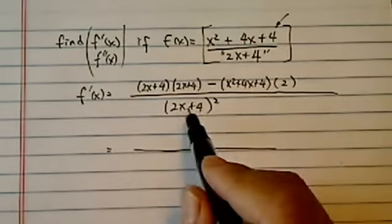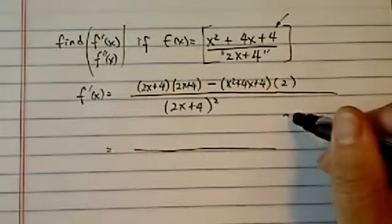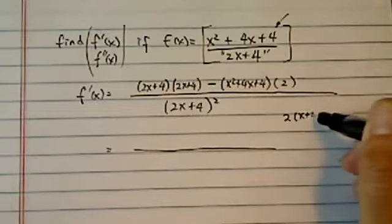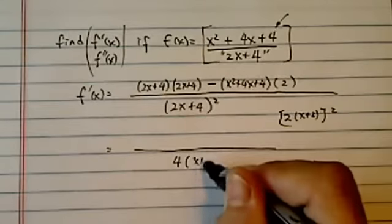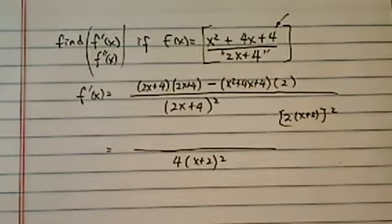Now let's simplify this one. There's a factor of 2 there. I'm going to do 2x plus 2. The whole thing is squared. So I have 4(x plus 2) squared on the bottom.